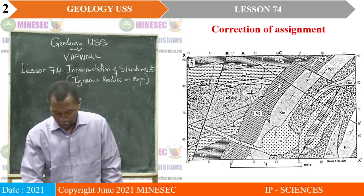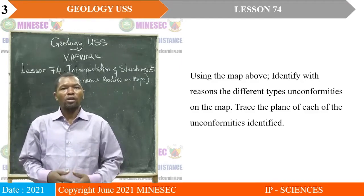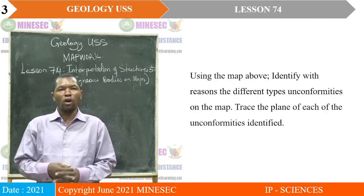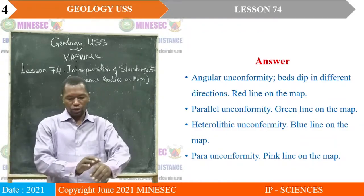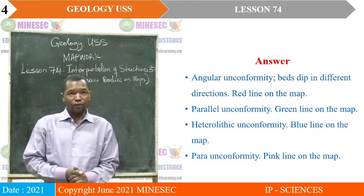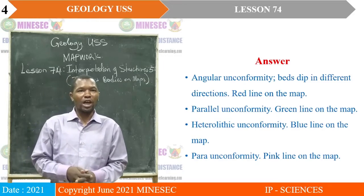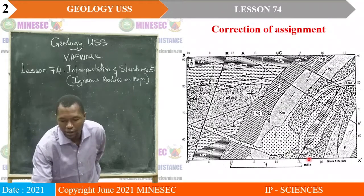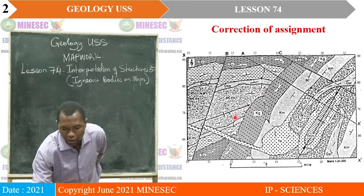By observing that map, we answer these questions. Using the map above, identify with reasons the different types of unconformities. The right approach: first, we have angular unconformity, because the beds dip in different directions — shown by the red lines on the map. You realize this is where we have the angular unconformity; this is the plane of unconformity, and the beds are dipping in different directions.